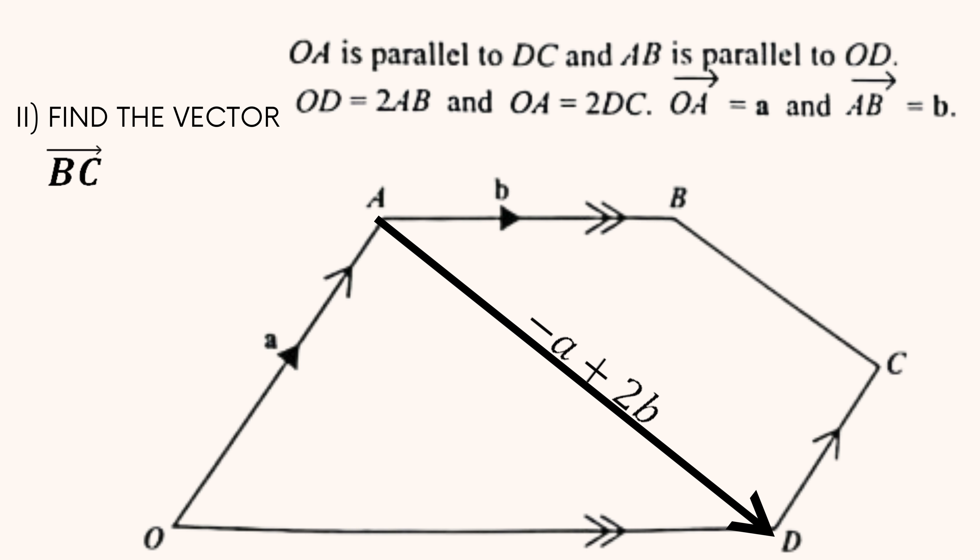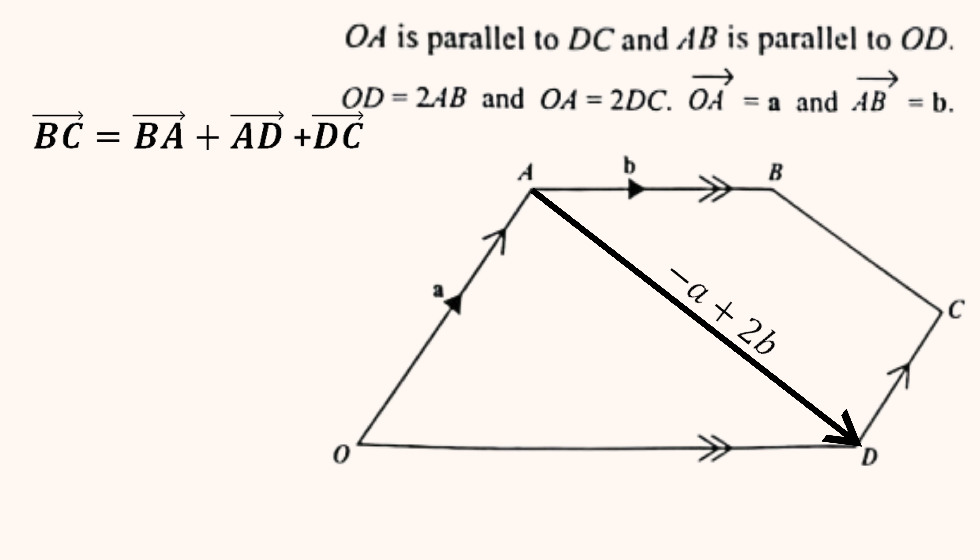In part two, we are finding the vector BC. To get from B to C, we can go from B to A, then from A to D, then from D to C. The vector AB is b, which means vector BA is minus b. The vector AD is minus a plus 2b.